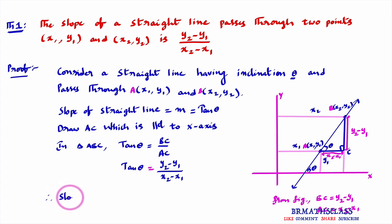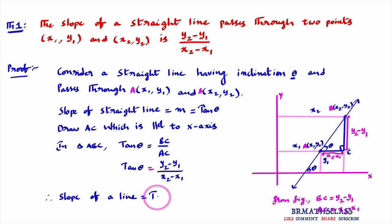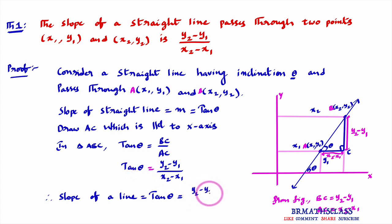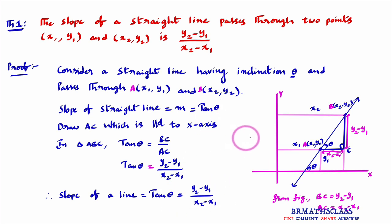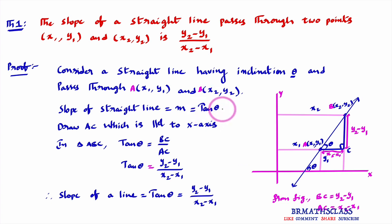To conclude: as theta is the inclination of the given line, slope equals tan theta. Since the line passes through two points x1, y1 and x2, y2, we find that tan theta equals y2 minus y1 divided by x2 minus x1. So slope of a straight line equals y2 minus y1 divided by x2 minus x1. Two key points: first, tan theta is the slope when theta is the inclination; second, if a line passes through x1, y1 and x2, y2, slope equals y2 minus y1 divided by x2 minus x1.